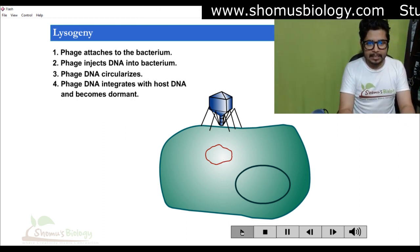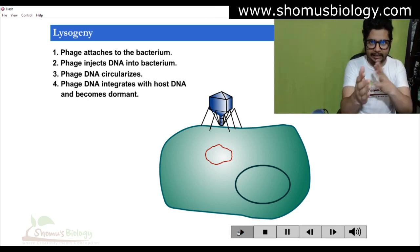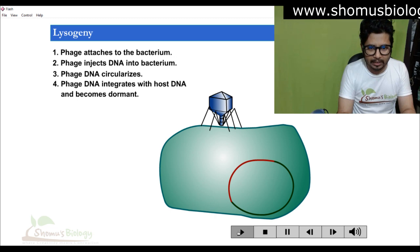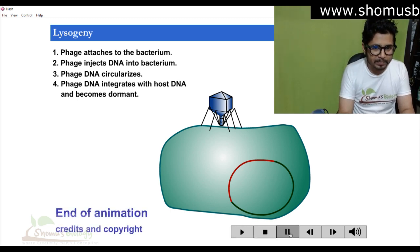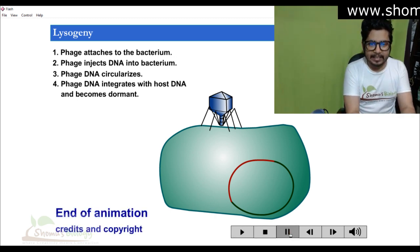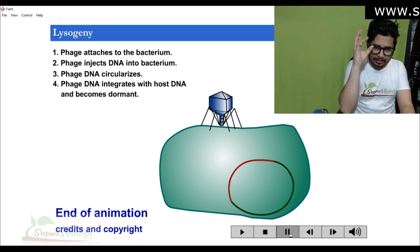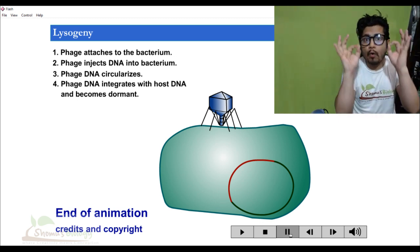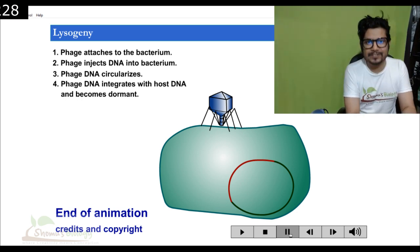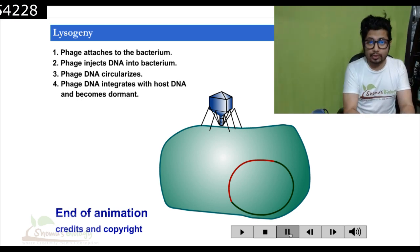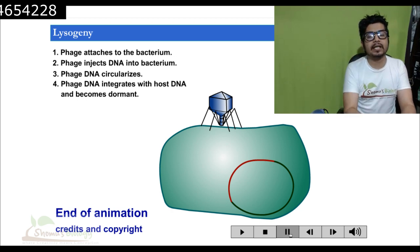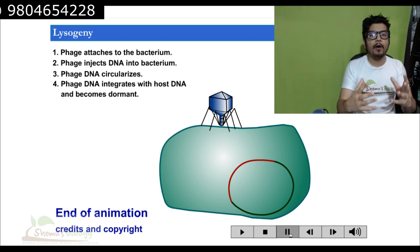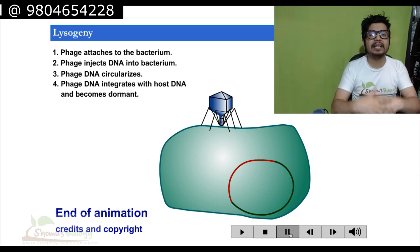Both DNAs are circular. Now the phage DNA will integrate into the host DNA — the red-colored DNA integrates into the green-colored DNA. After the integration, the phage DNA will remain dormant as a pro-phage inside the host cell. The host's circular DNA has now become lengthier — it has increased in size.